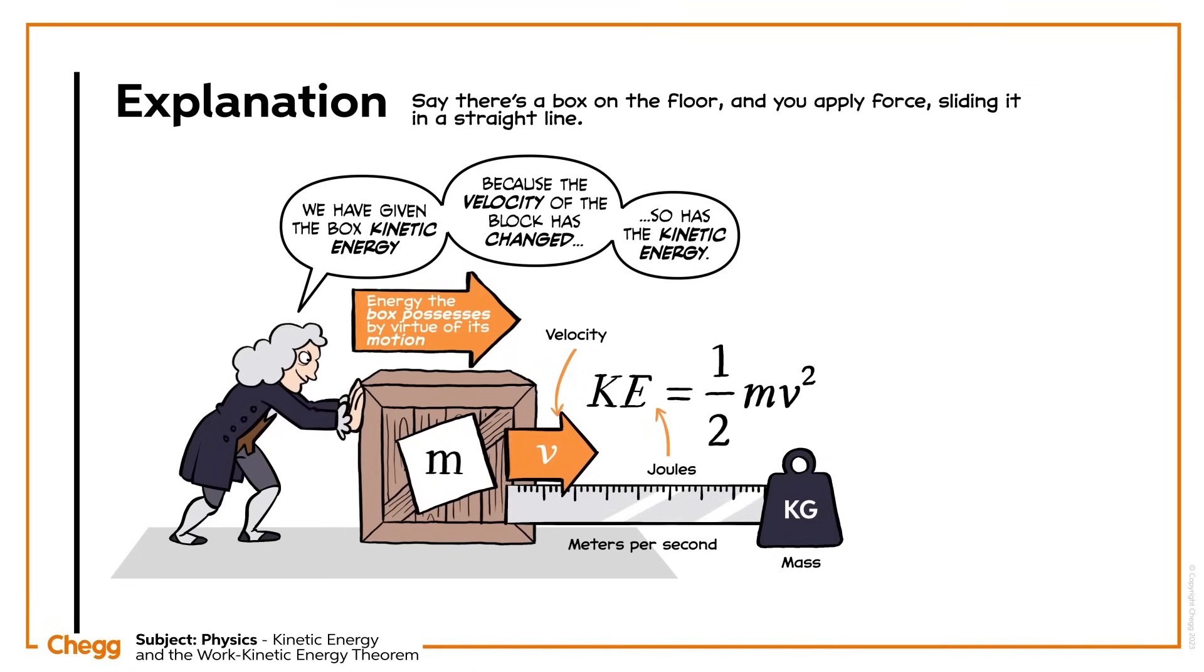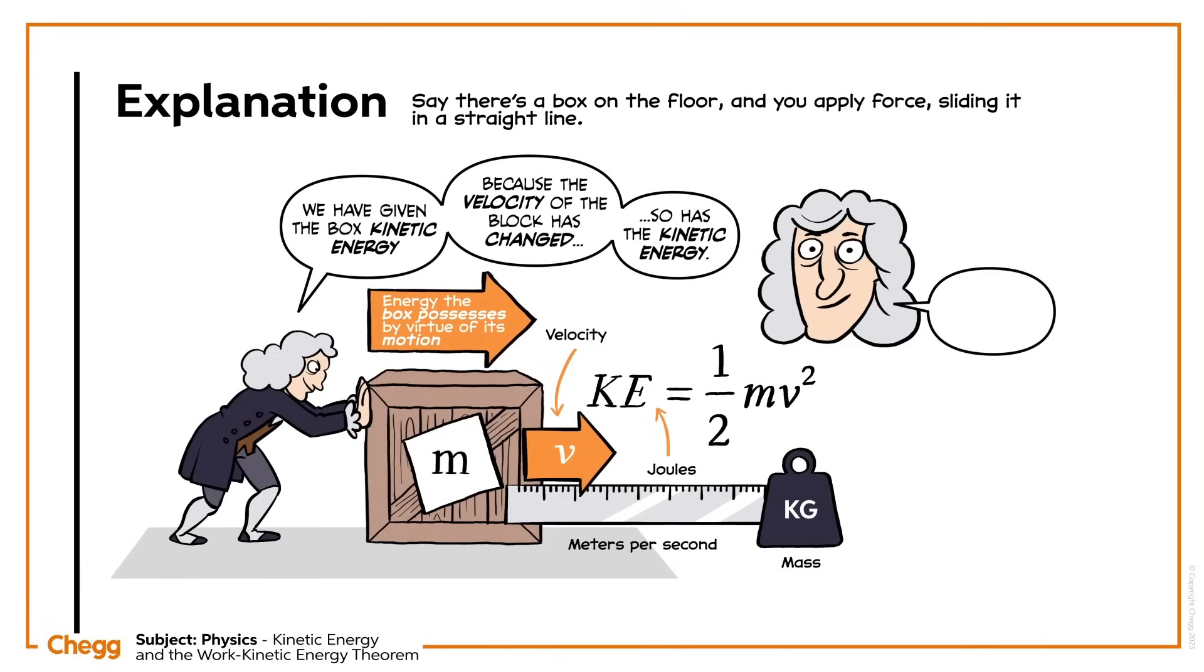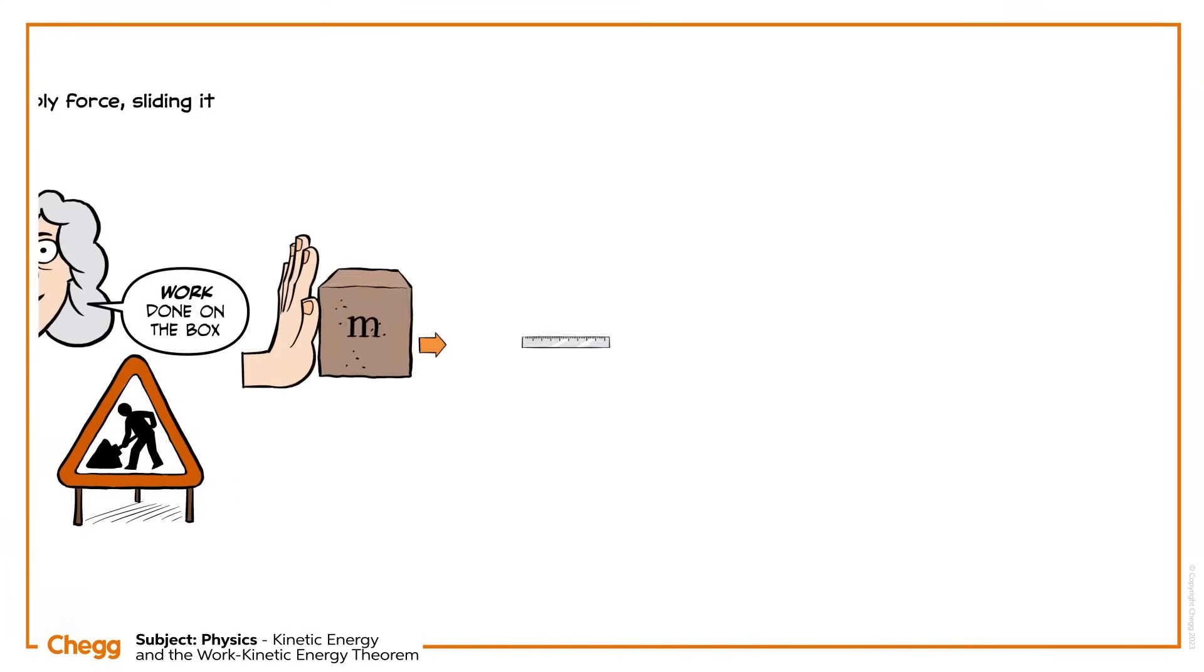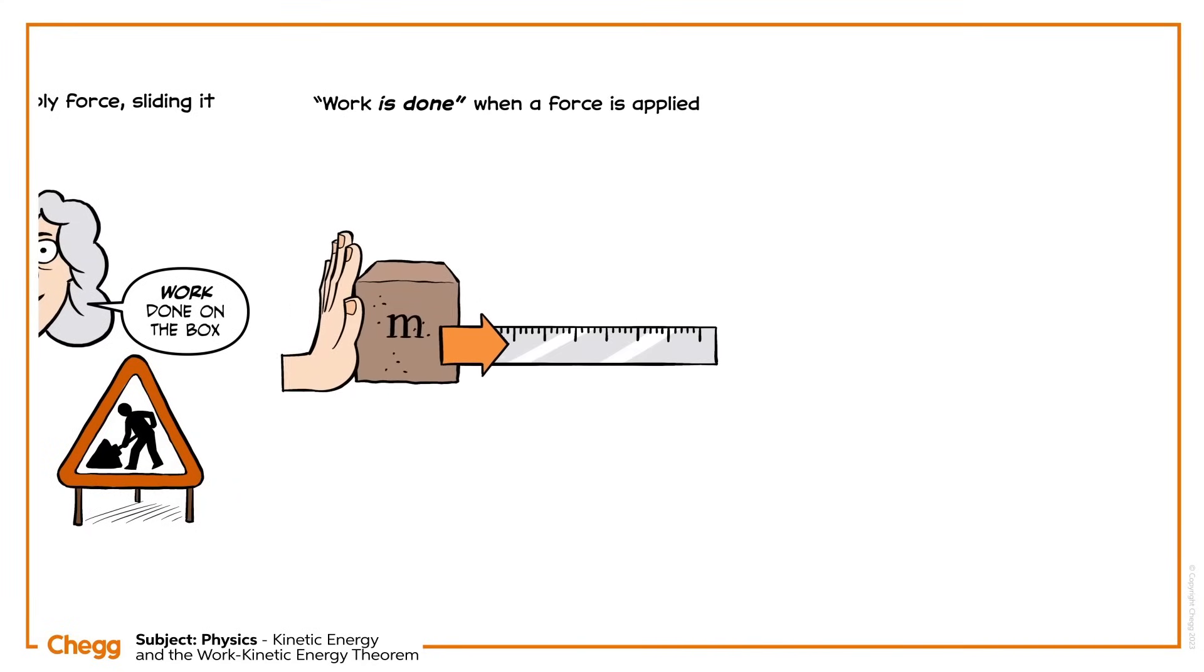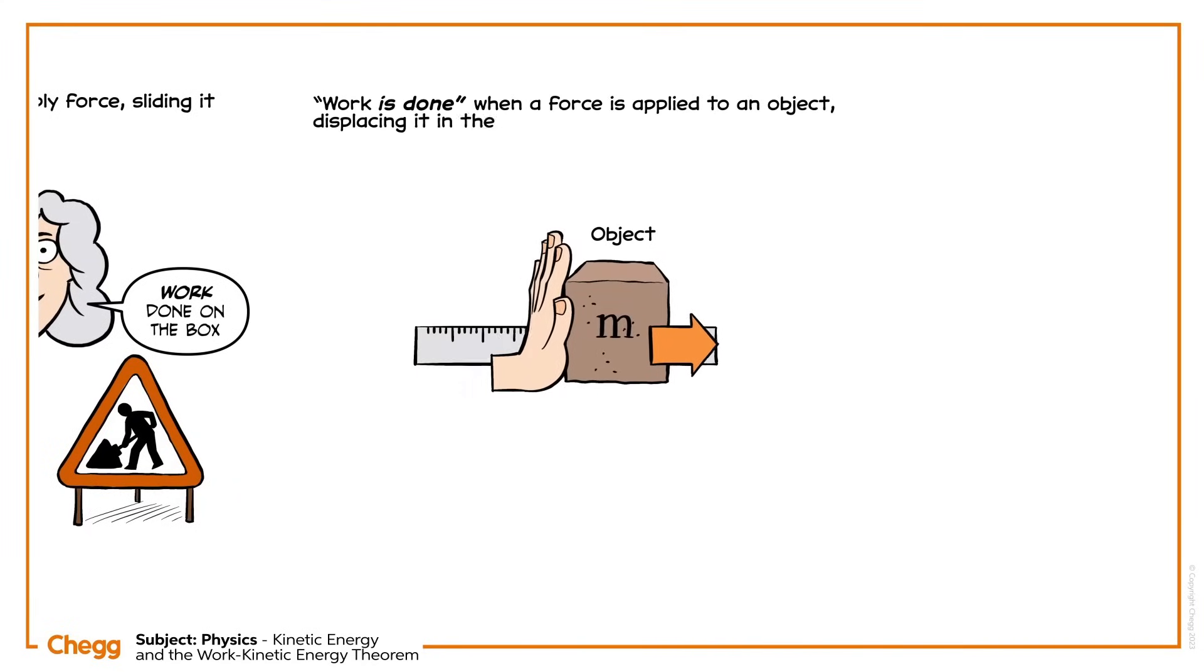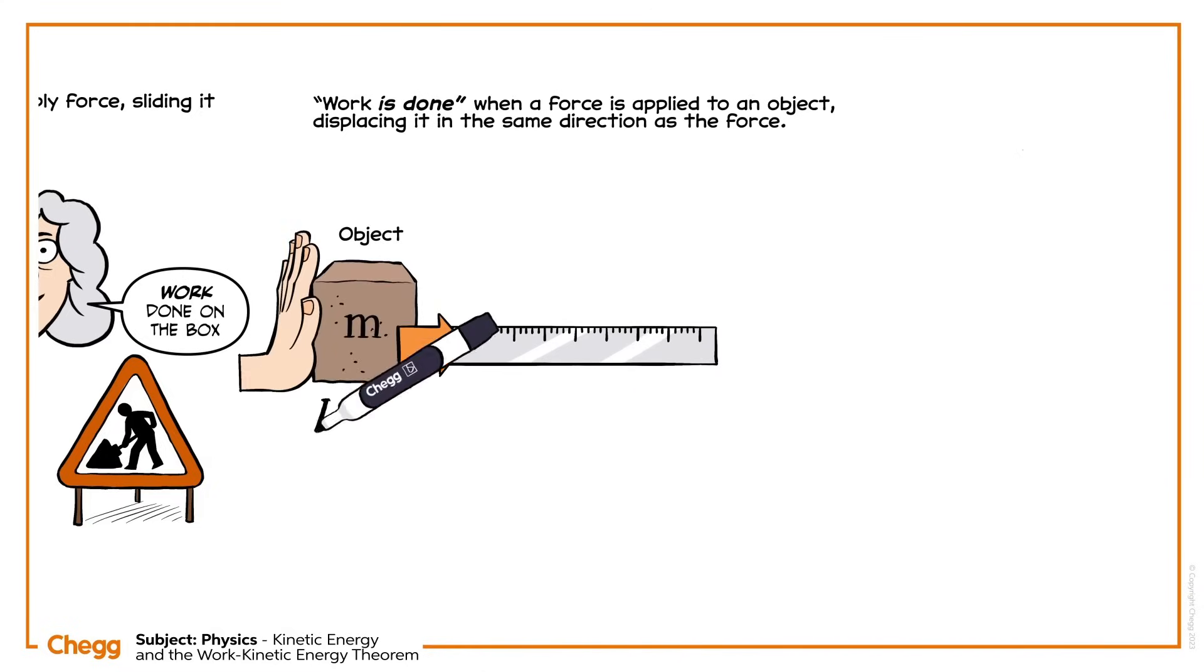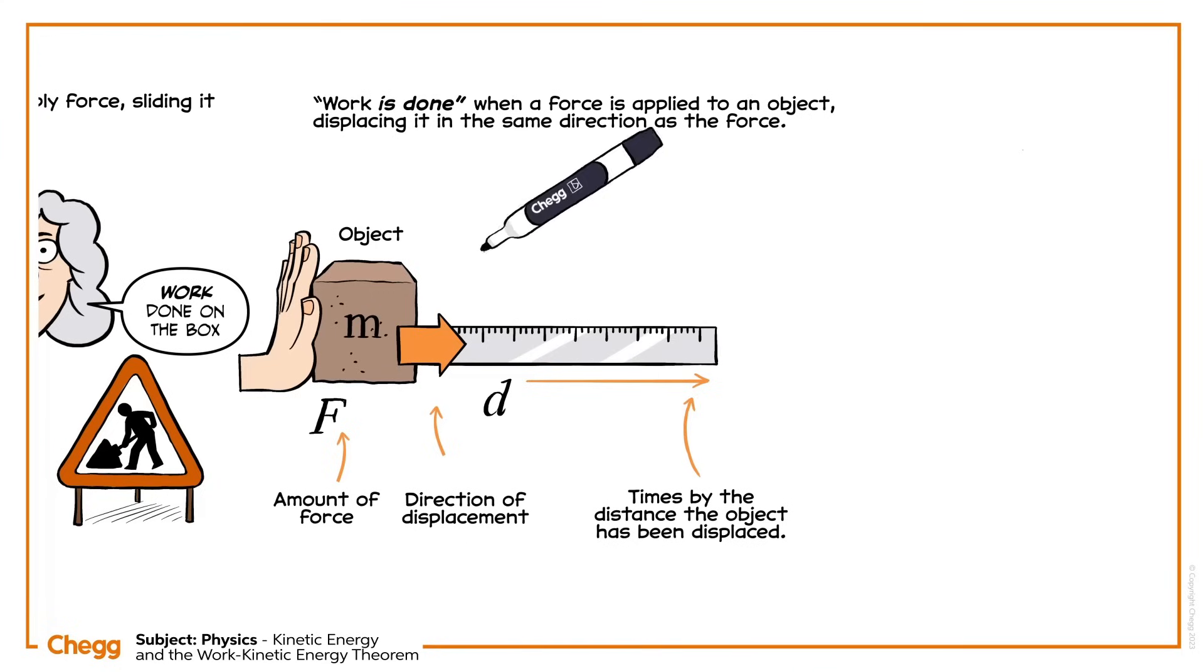When you pushed the box and it gained kinetic energy, work was done on the block. We say work is done when a force is applied to an object, displacing it in the same direction as the force. In mathematical terms, work is the amount of force applied in the direction of displacement, times by the distance the object has been displaced. We measure work in joules, force in newtons, and displacement in meters.